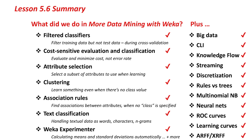We talked about big data — you experienced big data. We talked about the Command Line Interface, the Knowledge Flow Interface, streaming data using the Command Line Interface through Naive Bayes Updateable. Discretization filters. The difference between rules and trees, the similarities and differences. Multinomial Naive Bayes for text classification. We had a little look at neural nets, the simple perceptron and the multilayer perceptron. We learned about ROC curves and learning curves, and some more stuff about the ARFF format and the XML version of it.